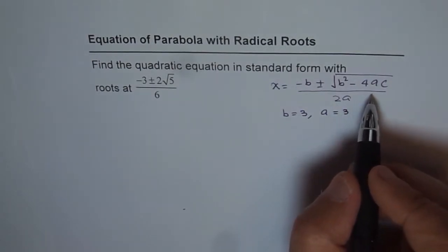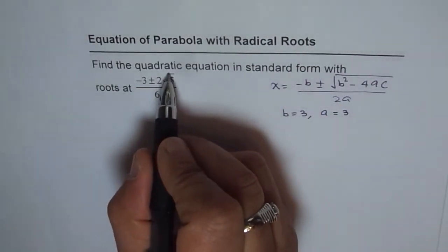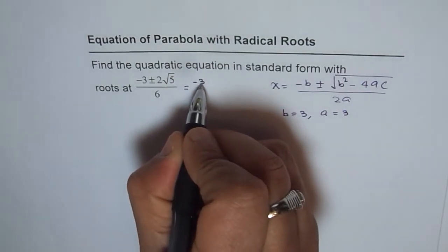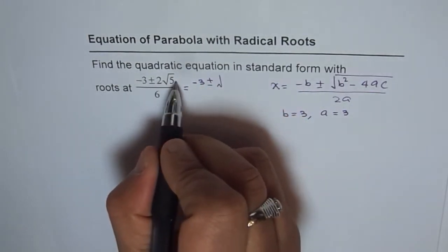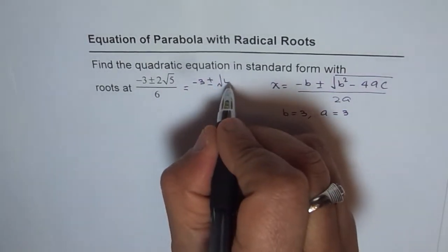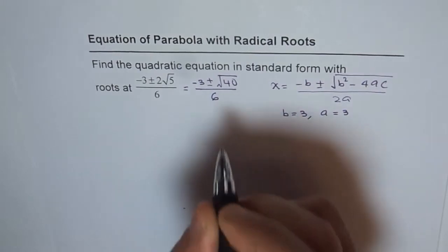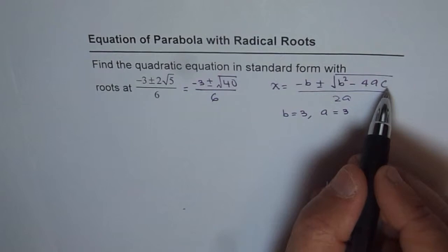How about b² - 4ac? Now b² - 4ac is something within the radical. Here we have 2√5. We can rewrite this as (-3 ± √40)/6. If I take the 2 inside the radical, it becomes 4, so we have 40 inside. Therefore, 40 equals b² - 4ac.